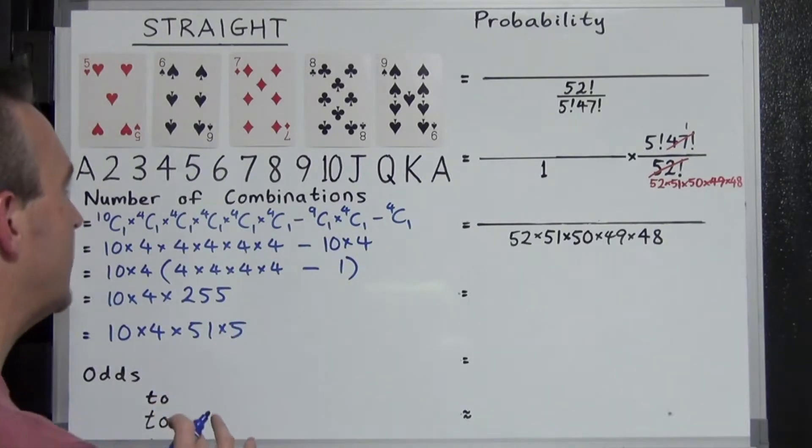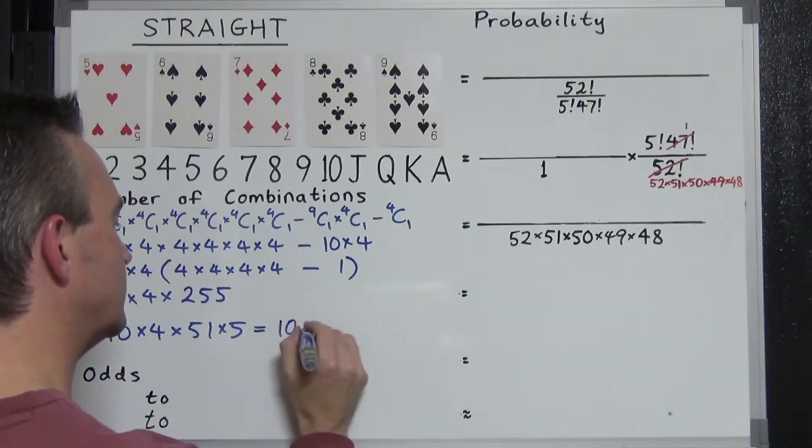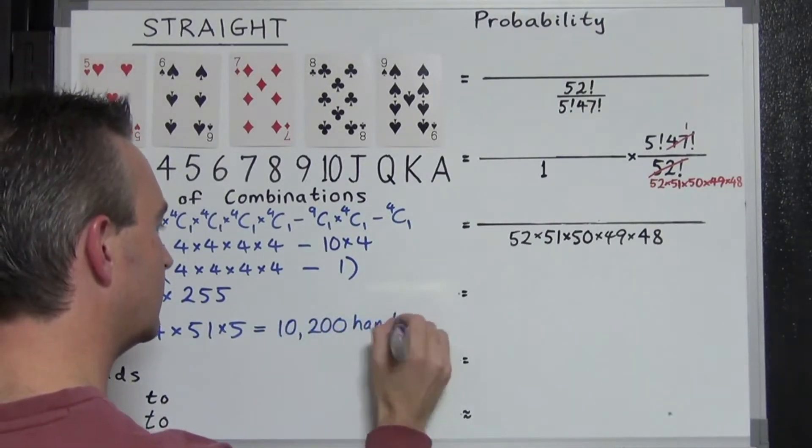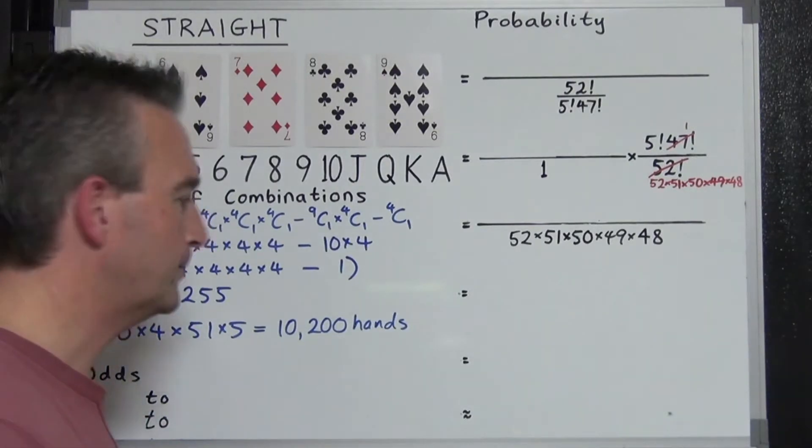So that's enough of the suspense. How many possible straights are there? Multiplying all that out we're going to get 10,200 hands. Different combinations of straights are possible. Let's check out the probability.